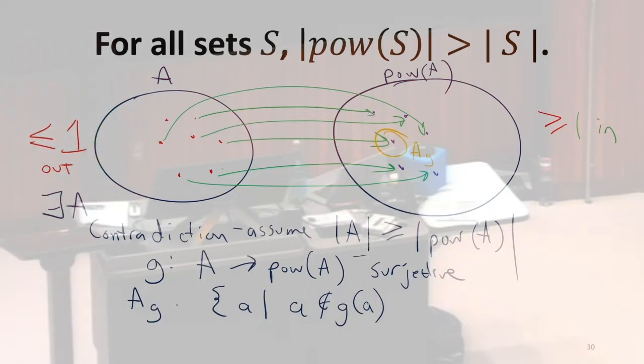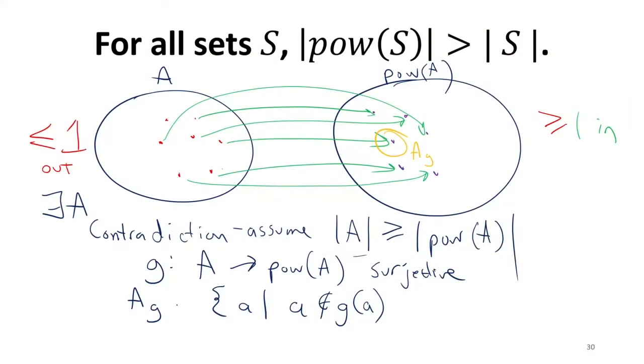Okay. The contradiction we're trying to get is that if we show that A is not bigger than the cardinality set, not bigger or equal to, right? The equal to is the real case that we care about. Then we're showing the power set is actually bigger, which is the surprising result.